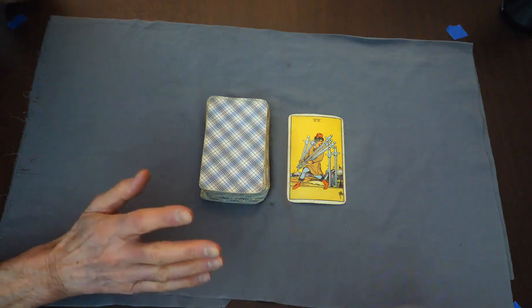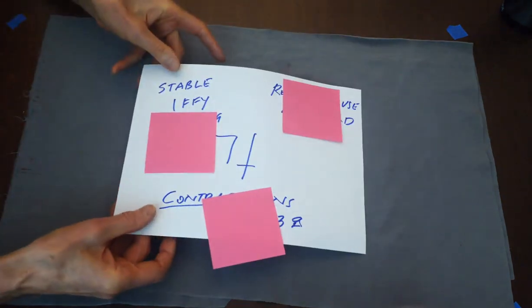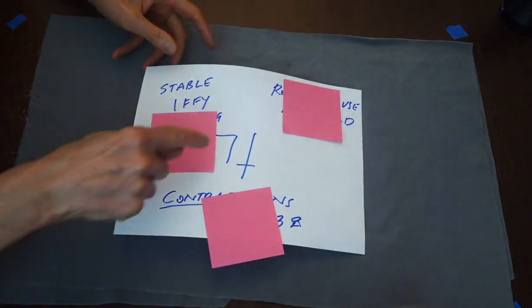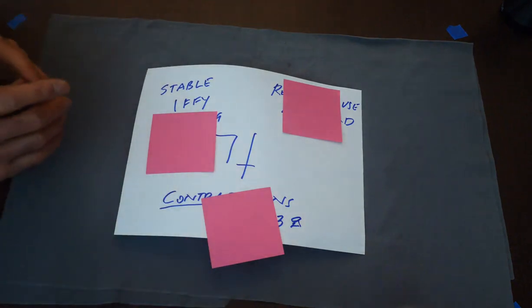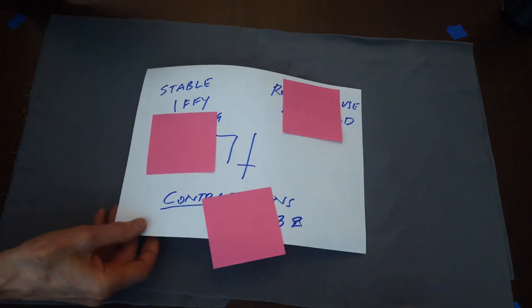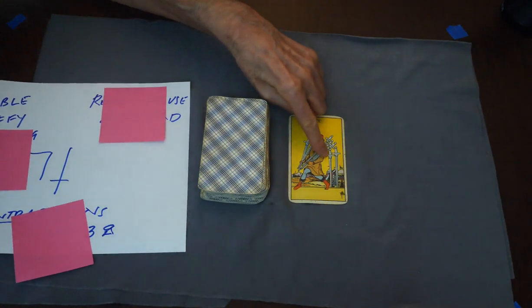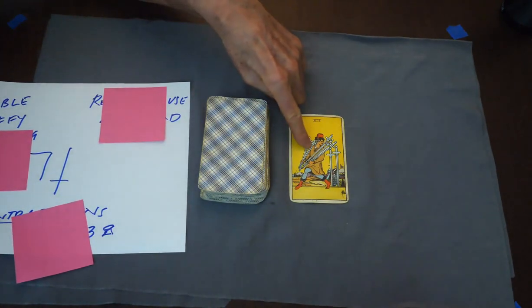So I have a suggestion on how you might want to develop ongoing understanding of any card or of all cards. You get a sheet of paper, and I wrote down the Seven of Swords in the middle. In the last one I talked about the difference between these two swords here, which are stable, and the fellow taking off with the other five.